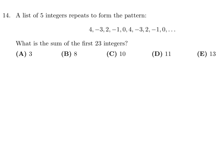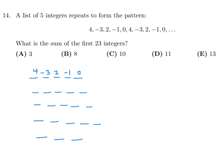A list of five integers repeats to form the pattern: 4, -3, 2, -1, 0, 4, -3, 2, -1, 0. What is the sum of the first 23 digits? Counting out 23 terms: the first group of five is 4, -3, 2, -1, 0. The sum there is 6 minus 4 which equals 2.